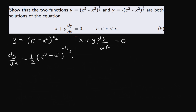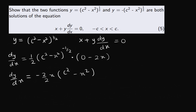This will multiply the derivative of what we have in the bracket. c squared is just a constant, so its derivative will go to zero. Then we have minus the derivative of x squared, so that would be minus 2x. Simplifying, dy over dx equals minus 2 over 2 times x times c squared minus x squared to the power of minus half.